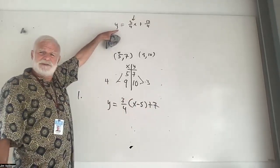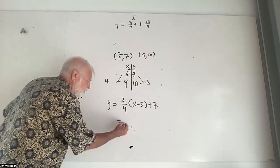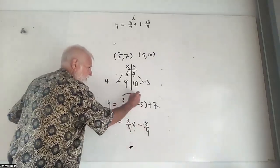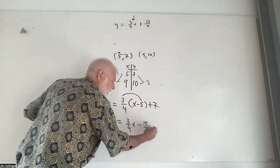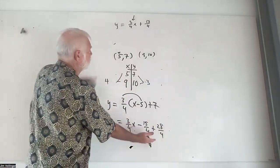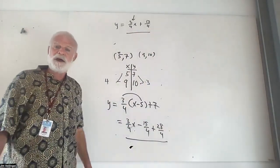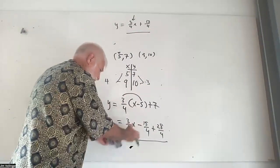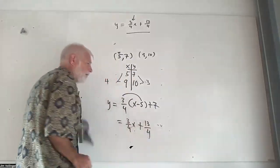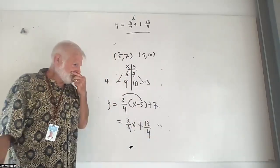The second thing is getting it into MX plus B form, just for the practice of working with fractions. We use the distributive property: three-fourths X minus 15 fourths. There's your tripling of negative 5, dividing by 4, and adding 28 fourths. I'll be asking you on Tuesday to convert to slope-intercept form and take 15 away from 28 — we're right back where we were before. I think I could do both of those things quicker than the way that's generally taught.